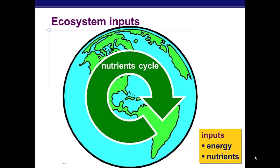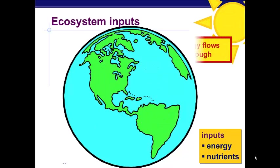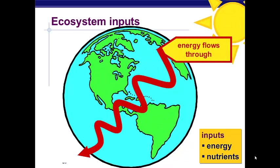Matter can neither be created nor destroyed, so it must be reused throughout the ecosystem. Energy, on the other hand, flows through an ecosystem. It enters via the sun and goes through a food chain, as we will talk about in a second.